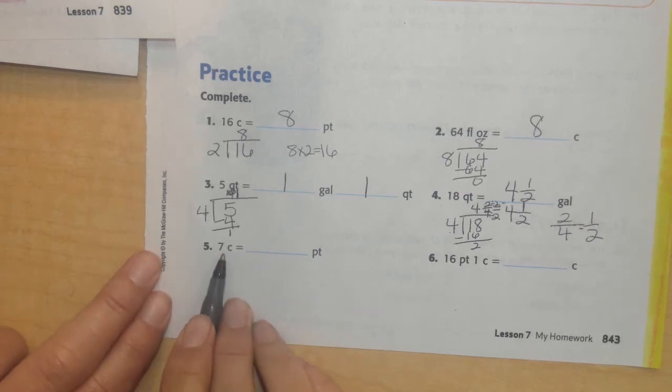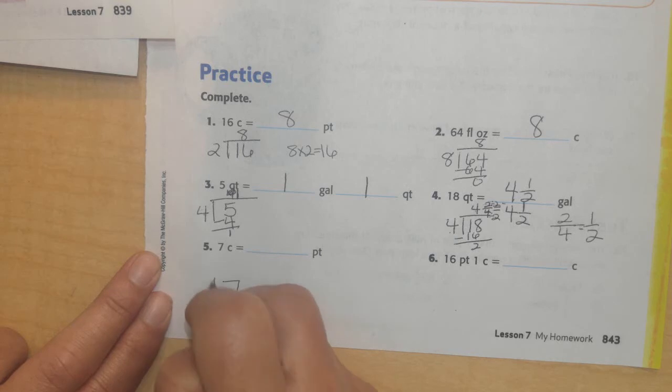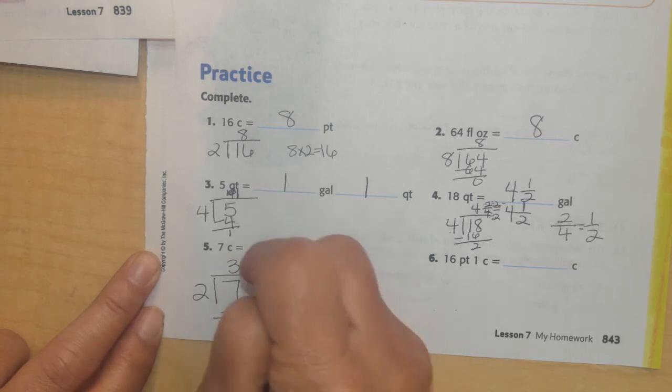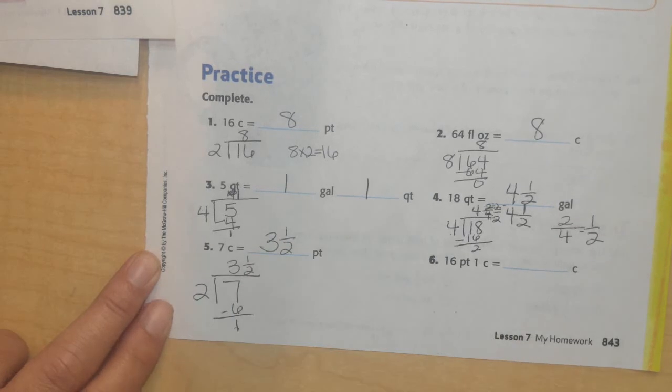All right, if I have 7 cups, I want to figure out how many pints I have. So all of these, I'm going from small units to make them bigger units. So I'm going to divide them up. Every 2 cups is 1 pint. So I'm going to take 7 and divide it by 2. So 3 times 2 is 6. I will subtract. I'll get 1. So I will have 3. And 1 is my new numerator. 2 is my new denominator. I'm going to have 3 and 1 half pints.